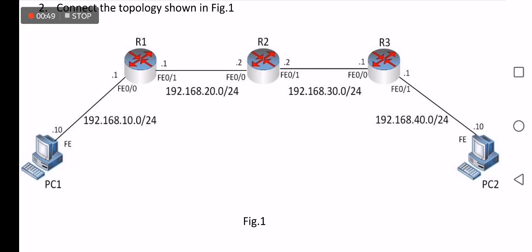The topology contains three routers denoted by R1, R2, and R3, and four networks denoted by the IPs 10.0, 20.0, 30.0, and 40.0. Typically, PC1 cannot reach PC2 before the configuration of routing protocols in each router. In our case, we will test the configuration of static routing, which means we will use manual configuration.